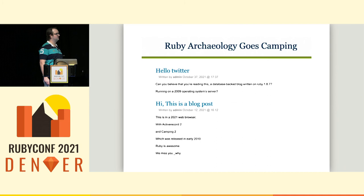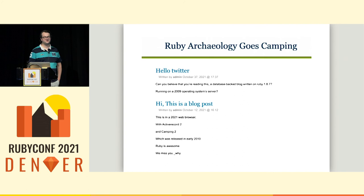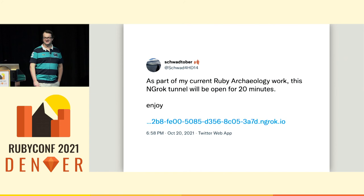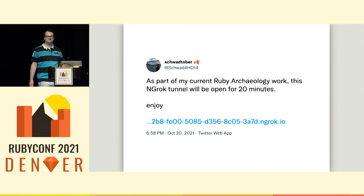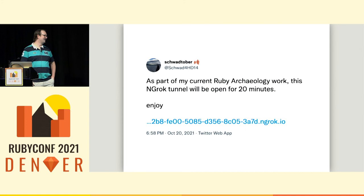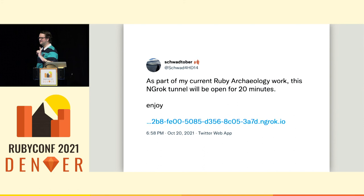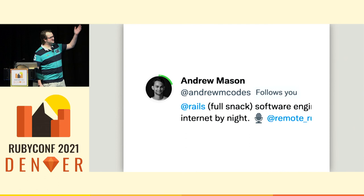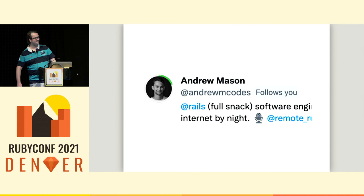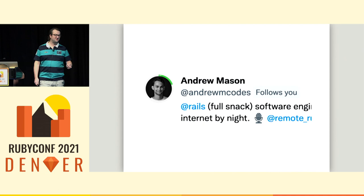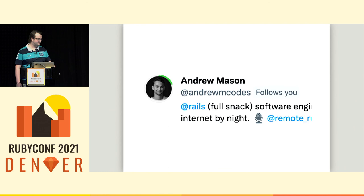It worked: a 2008 full stack web application, writing some blog posts. As part of an experiment for this talk, for 20 minutes I opened an ngrok tunnel to this website and tweeted that anyone could come in and look at it. I got a couple of hits but only one like on the tweet — from Andrew Mason, who is here today and was ready at all times to drop on my Twitter feed and looked at a website from thousands of miles away that was built on Why's technology. Thank you very much for that.